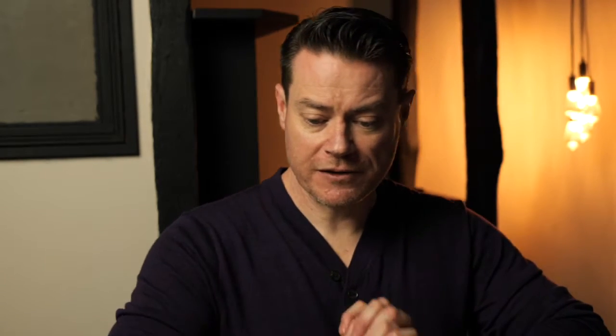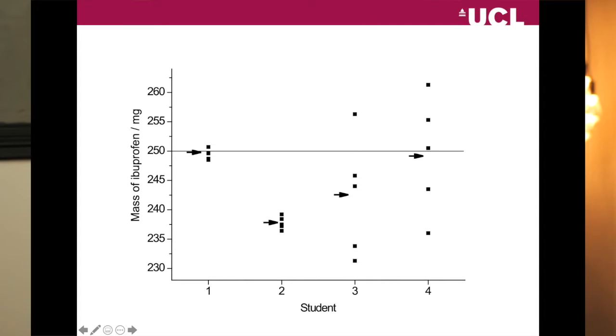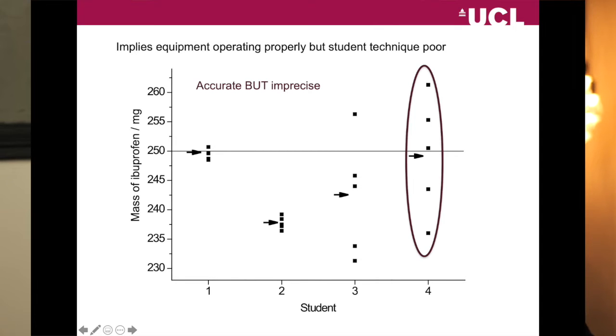Student number three has a lot of spread in their data, so they're imprecise — every measurement gives a different answer. The black arrow is also not close to the line, so student three is both inaccurate and imprecise — not a good combination. Student four's data are quite spread, so they're imprecise. However, the mean shown by the arrow is actually quite close to the true value — so student four is accurate but imprecise.